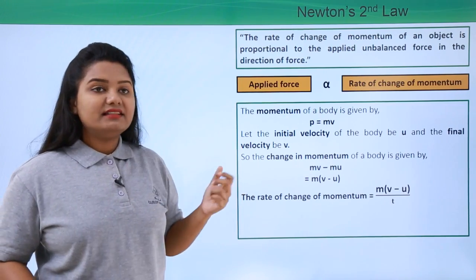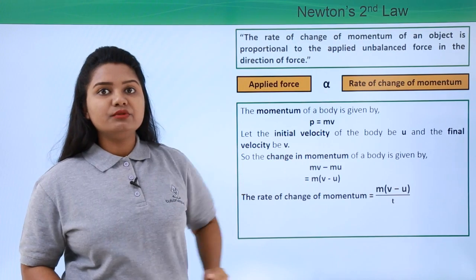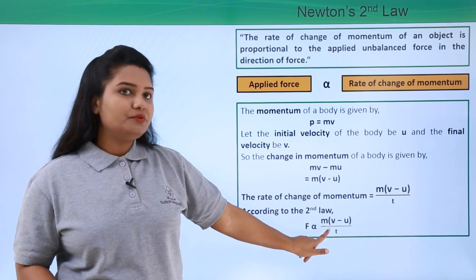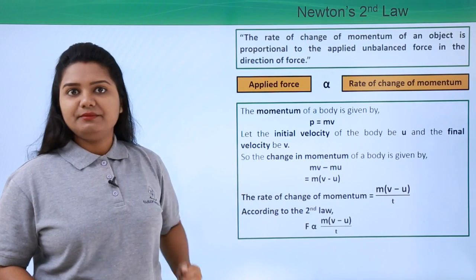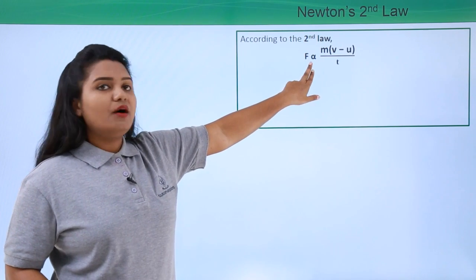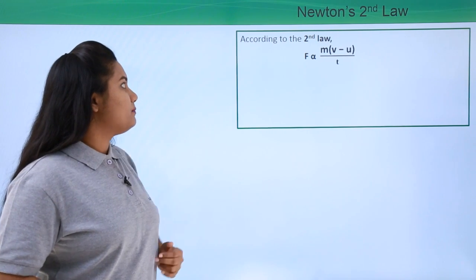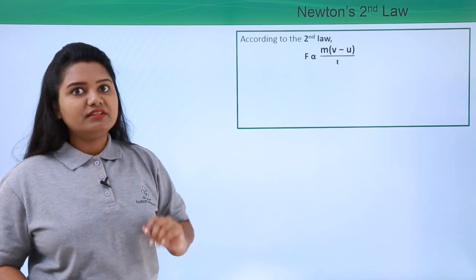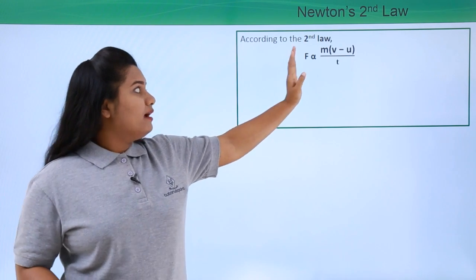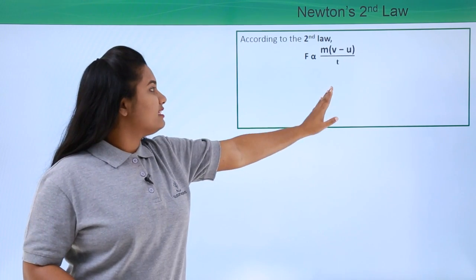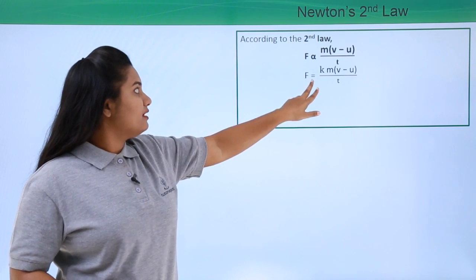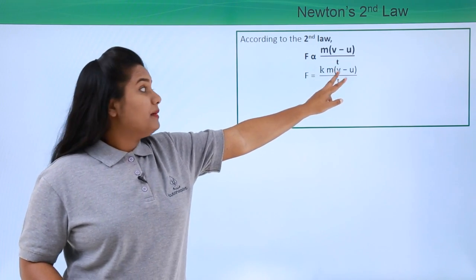From the second law it is clear that the applied force F is directly proportional to the rate of change of momentum, so F ∝ m(v - u)/t. To remove the proportionality symbol, we multiply by a constant k, giving F = k × m(v - u)/t.